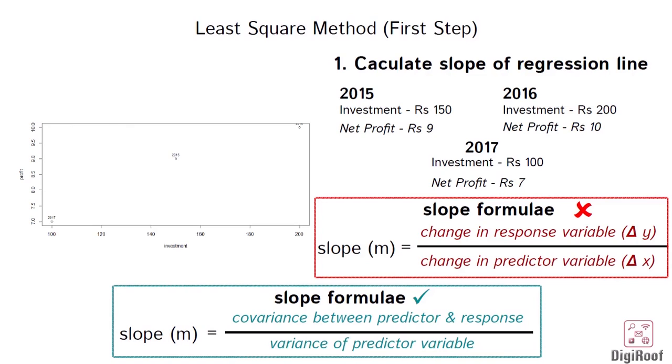So, there is another formula of slope which is covariance between the predictor and response variable divided by the variance of the predictor variable. The value calculated using this formula represents the slope of the straight line that can be made using these three points we have on the plot.